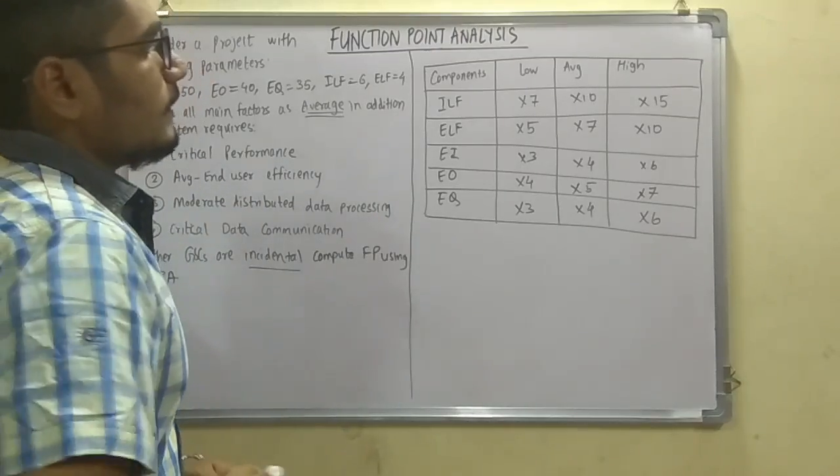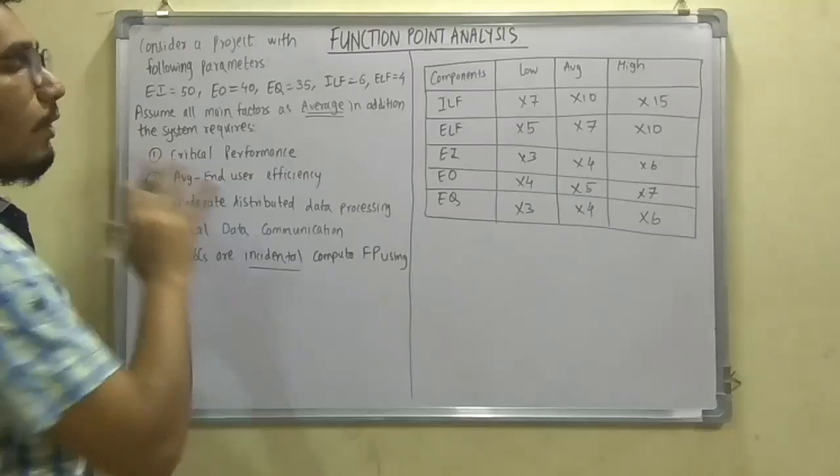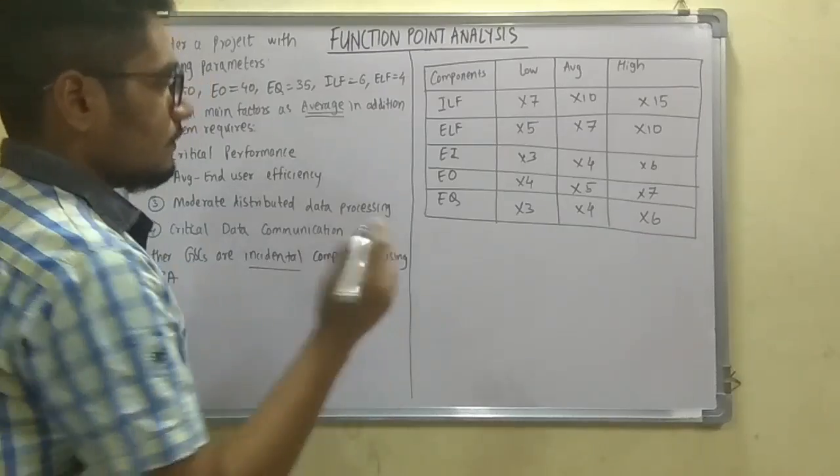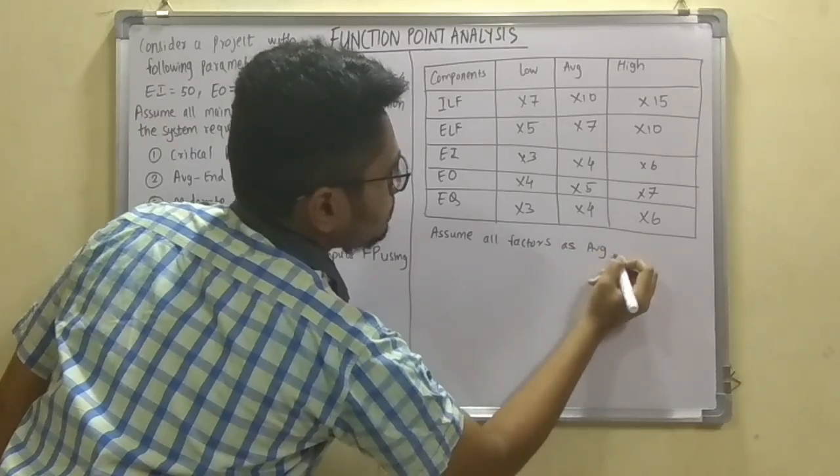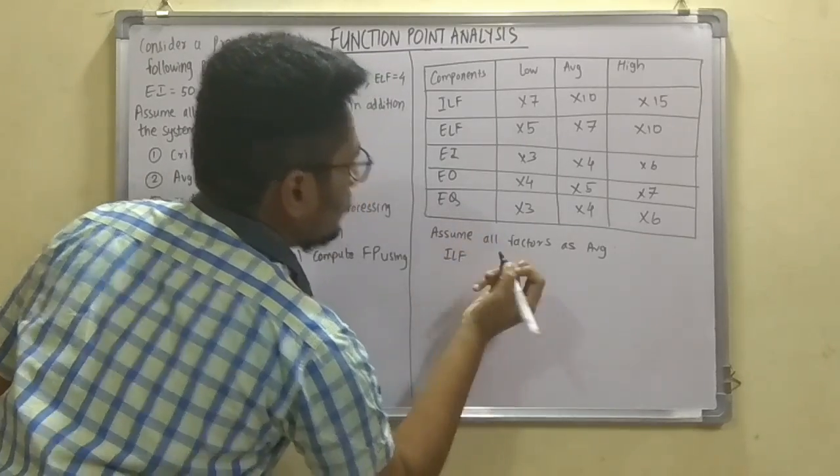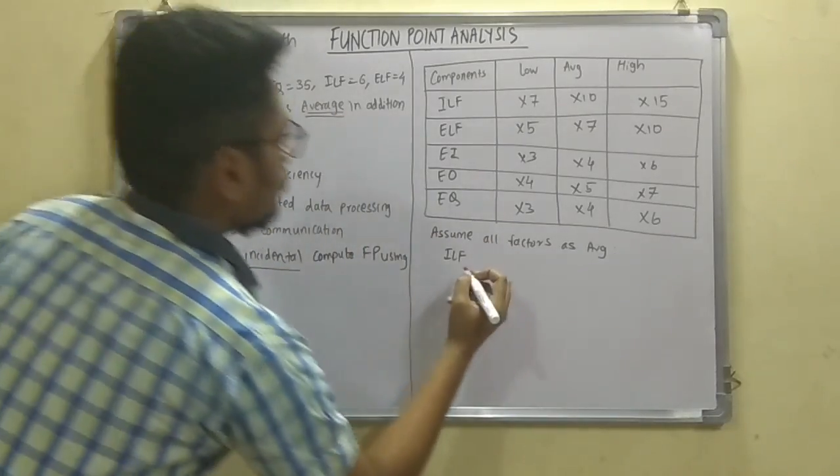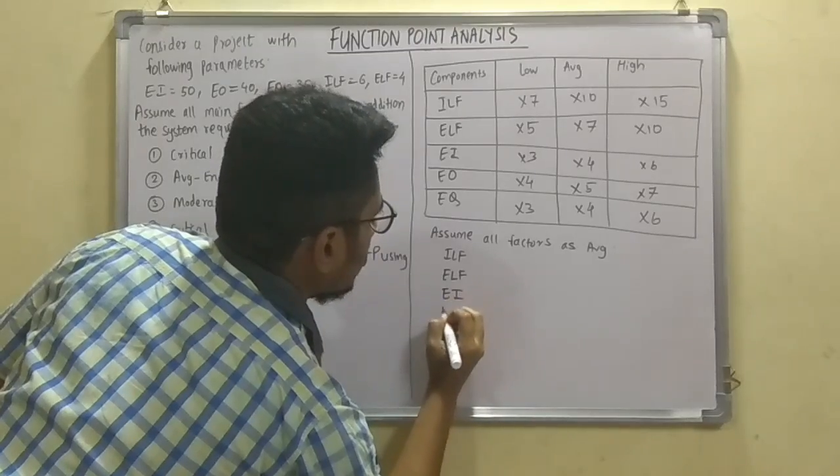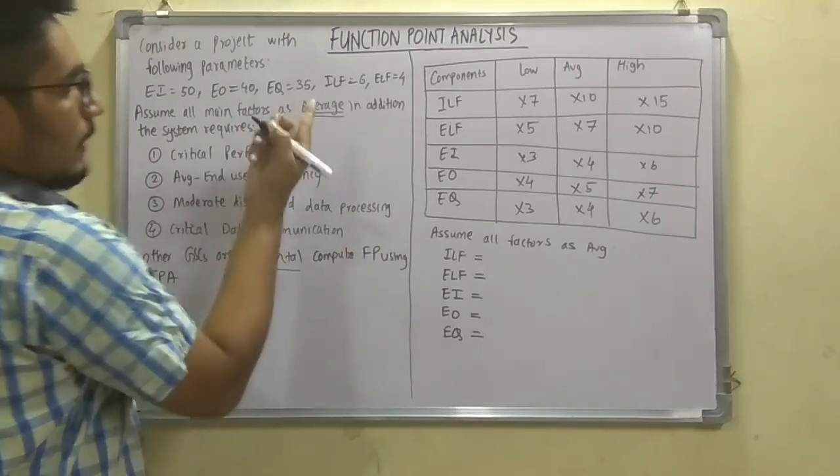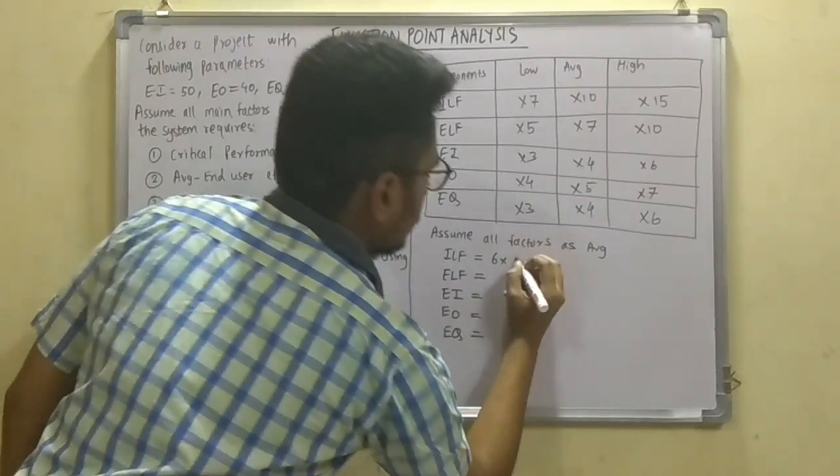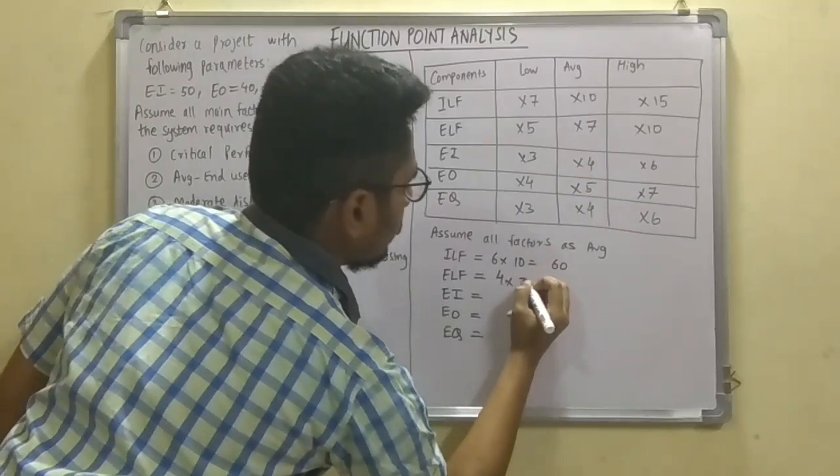Now let us start. So first of all, it has been given that assume all the main factors as average. First we have the ILF, we just have to multiply this. We have to multiply the given value with this. So we will list out in the sequence that they have given: ILF, ELF, EI, EO, and EQ. So let's start. First we have ILF, that is 6, and we have to multiply with the average, that is 6 into 10, which is 60. Then ELF is given as 4, that is 4 into 7, which is 28.